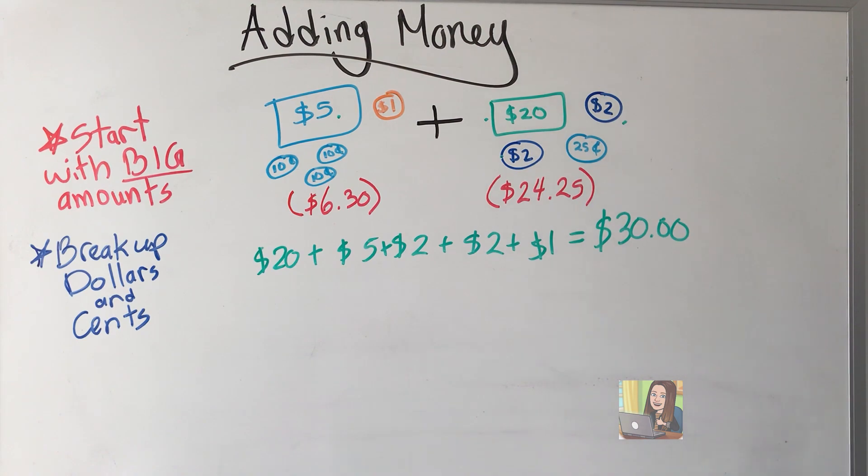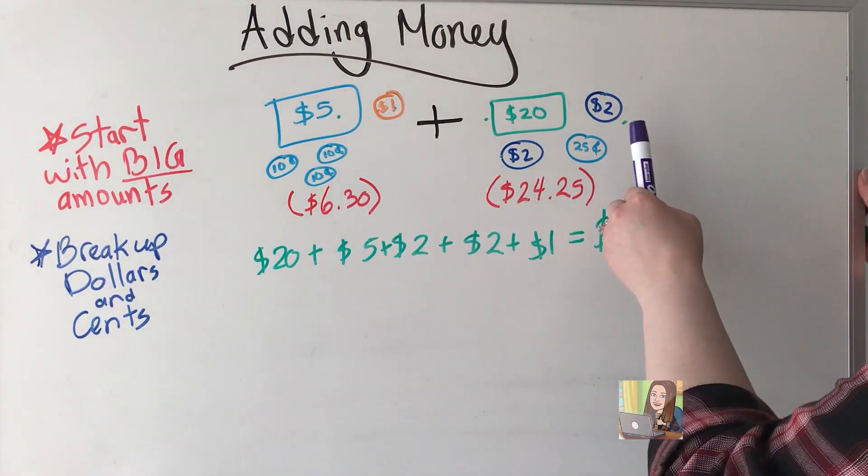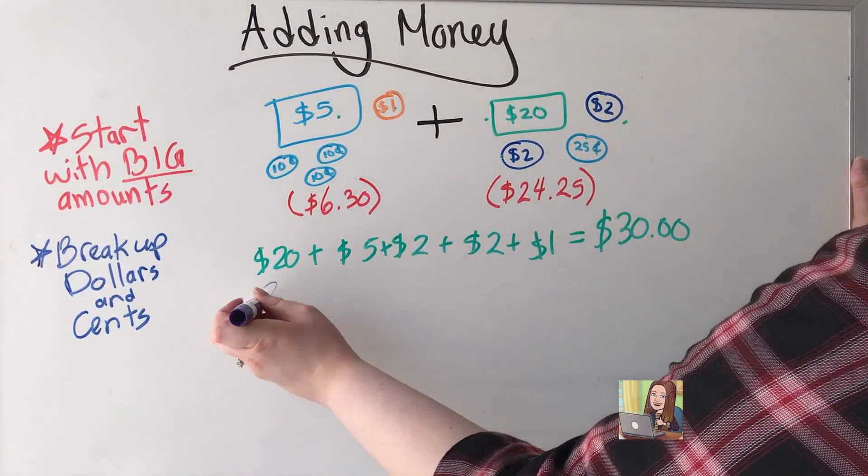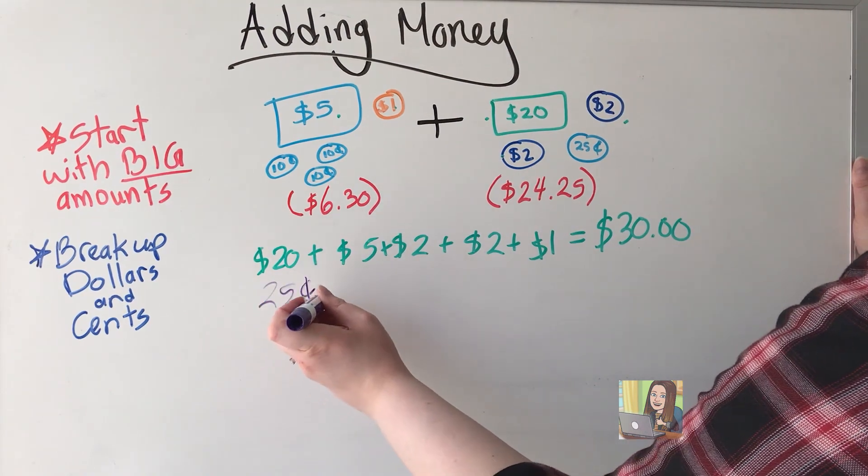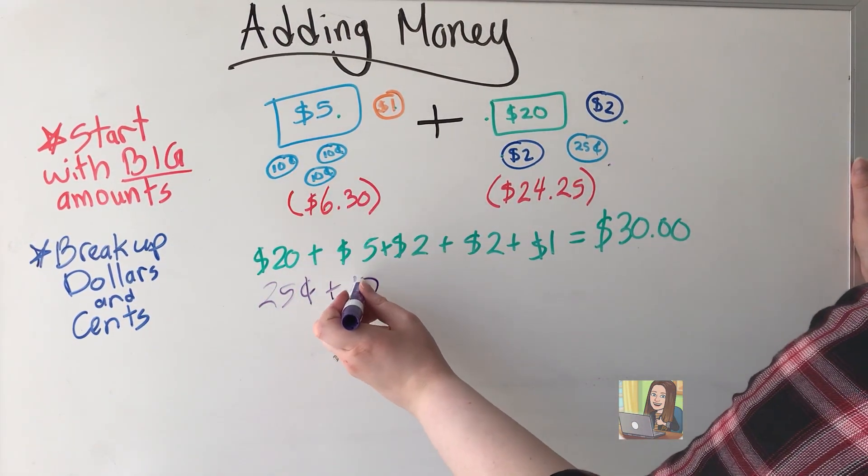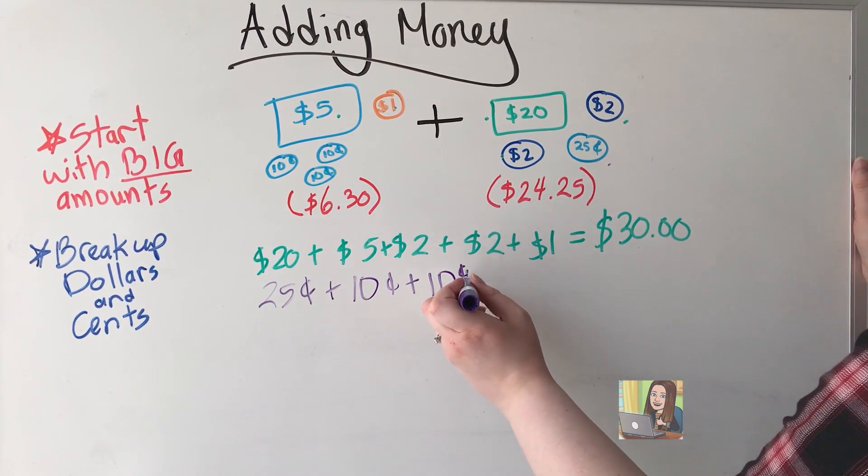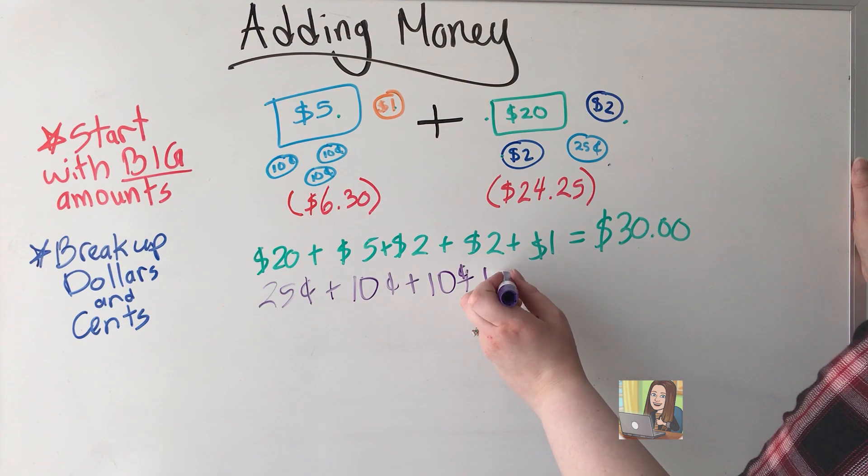Now I'm going to look at the cents. I forgot to dot off my 1. There we go. The biggest cents I have here is 25. So 25 cents plus some 10s. 10 cent, 10 cent. Whoops. And 10 cent.